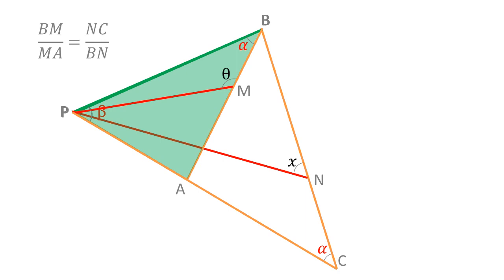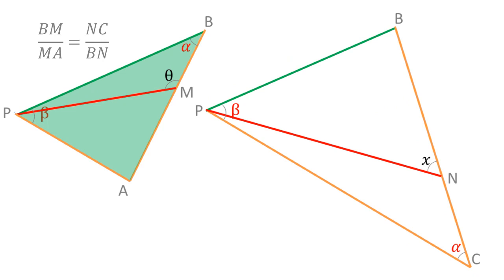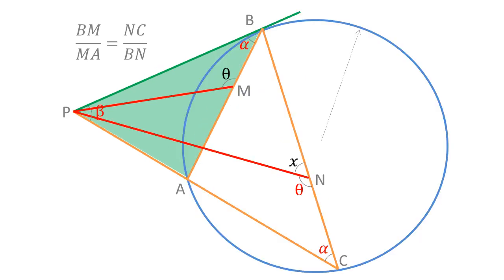Let's go back to the problem and focus on triangles PAB and PBC. They are similar because both have interior angles measuring alpha and beta. Cevians PM and PN are corresponding elements because they start from the corresponding angles — the ones that measure beta — and because the ratio between BM and MA equals the ratio between NC and BN. Therefore, the obtuse angle between cevian PN and side BC in triangle PBC equals theta, meaning the measure of angle PNC is theta. At point N, the angle that measures X plus theta is a straight angle equal to 180 degrees, so X equals 180 degrees minus theta.